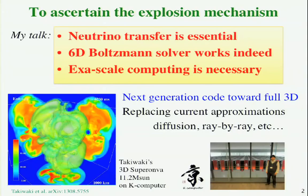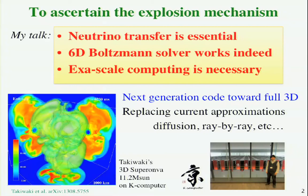This morning we have had already the useful review by Tony Mezzacappa on the state of the explosion mechanism. So here I focus on several points, three points actually in my talk. I'm stressing that neutrino transfer is essential to find out the outcome of the explosion. And the phenomenon near the threshold. The second point, the 6D Boltzmann solver is running, and it works indeed at the current supercomputing facilities. But still we need exascale computing. It's necessary to perform the full 6D Boltzmann simulations.